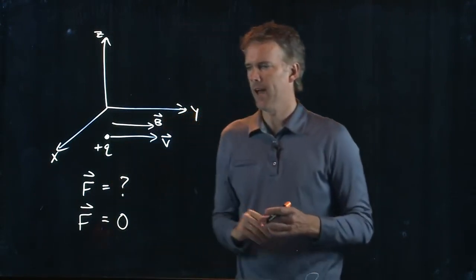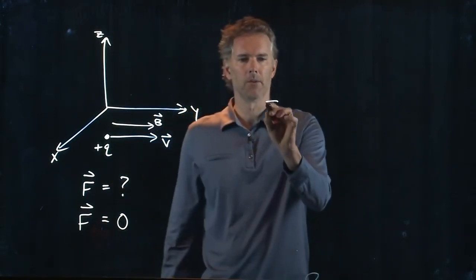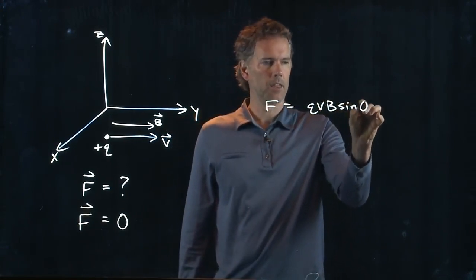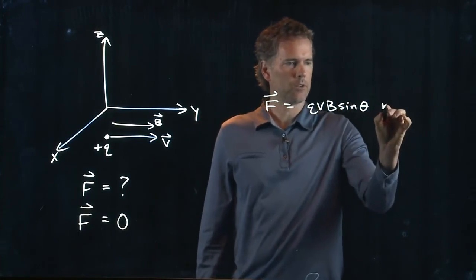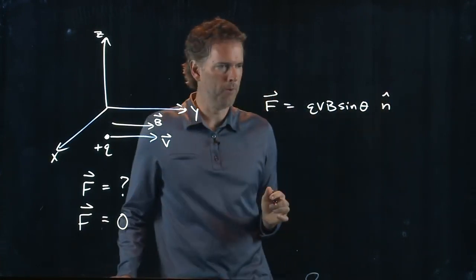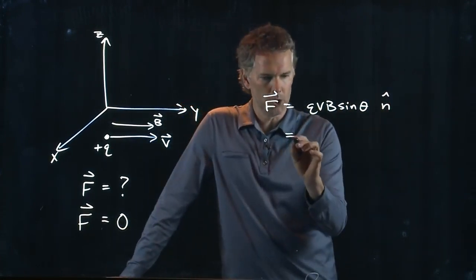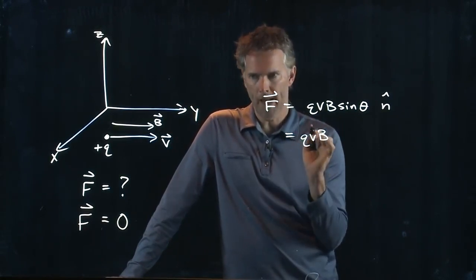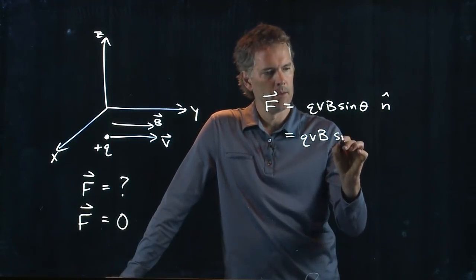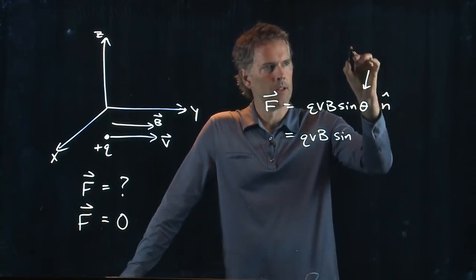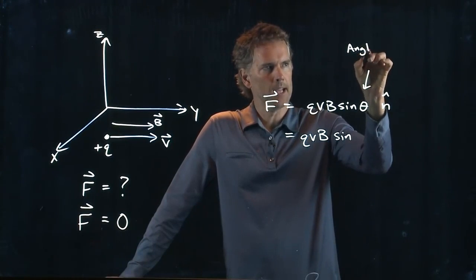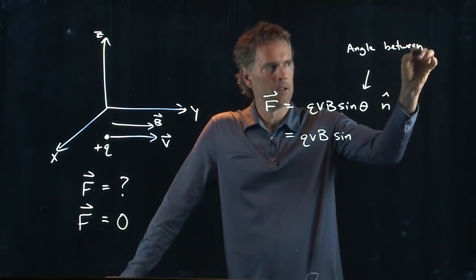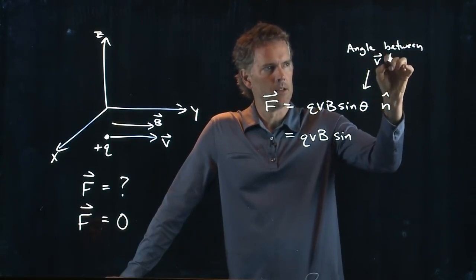But how do we see that mathematically? Well, let's go back to our definition. F equals Q, V, B at a direction which we determine from the right-hand rule. We've got a Q, we've got a V, we have a B. But then we have the sine of the angle. And remember, the angle here is between V and B.